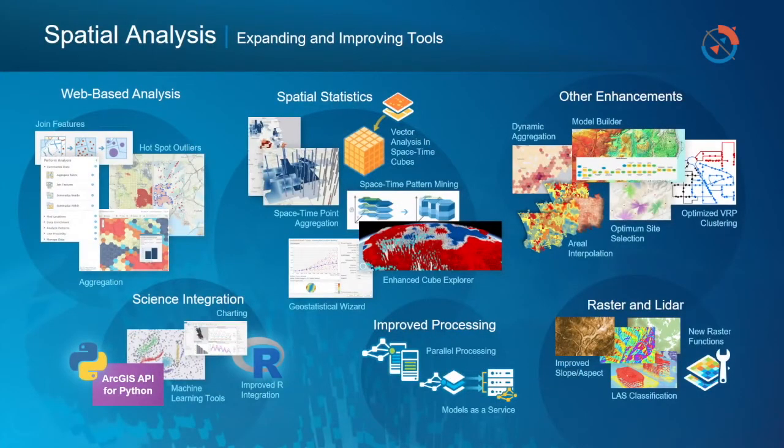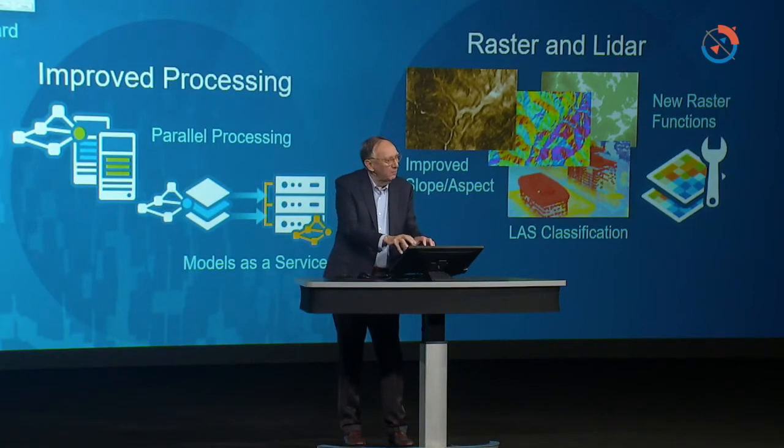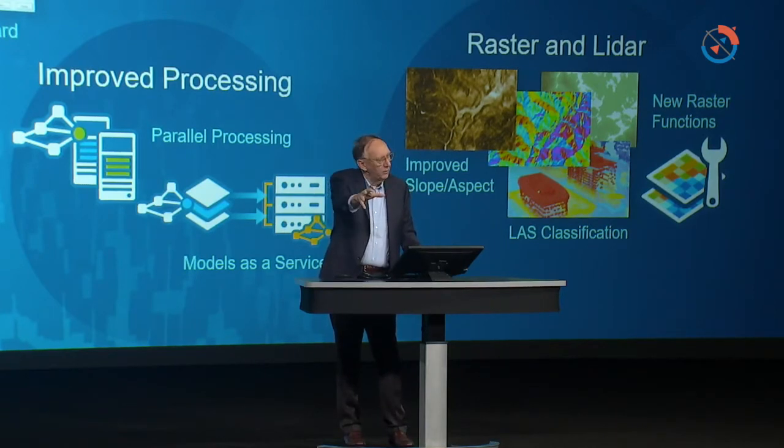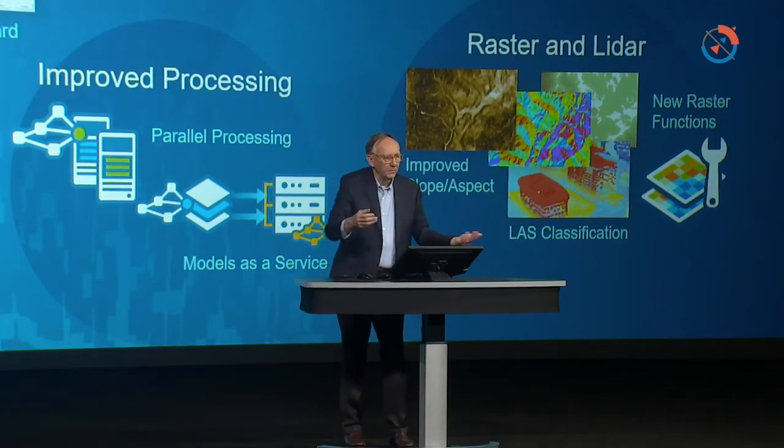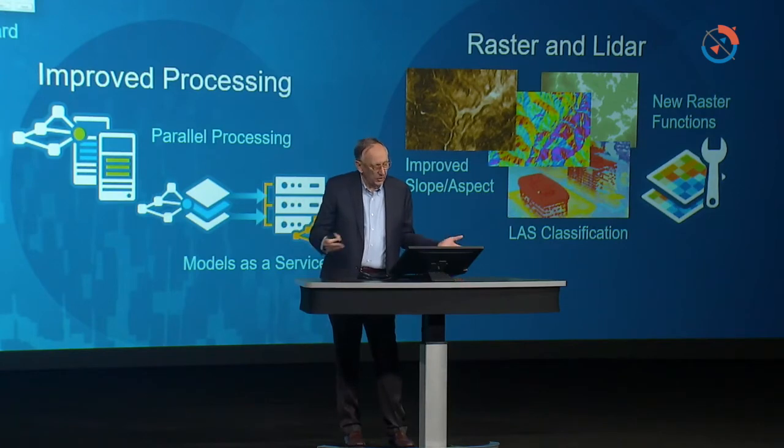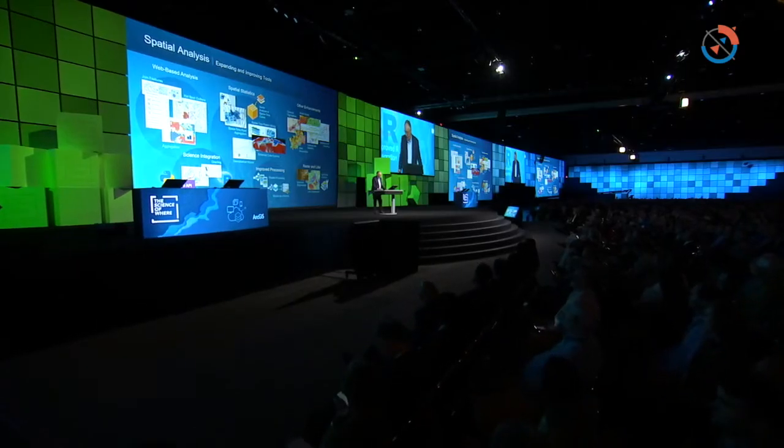The integration with science through the R integration and the ArcGIS API for Python are very powerful tools connecting us to other communities. But for me, the most interesting one is improved processing — using the parallel processing capabilities of the new GPU technology to parallelize computation on a desktop for raster analytics, improving speed. And look at models as a service: if I make a model builder model, I can right-click it, send it over to my enterprise server, and it immediately comes alive as a service that other people can use. This is going to change how we share our tradecraft in the spatial analysis world.